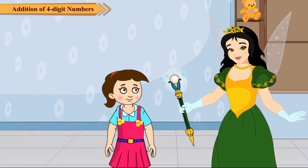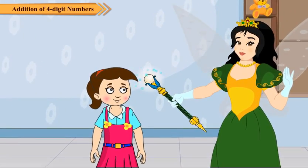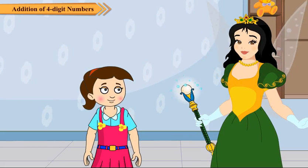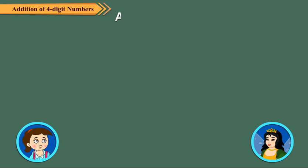Neha, this was an example without regrouping. Now we will take an example with regrouping. Let us add 5348 and 3675.